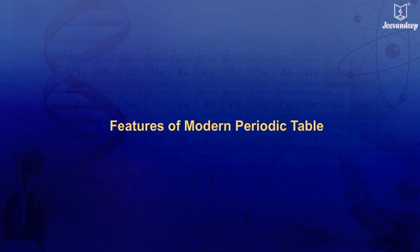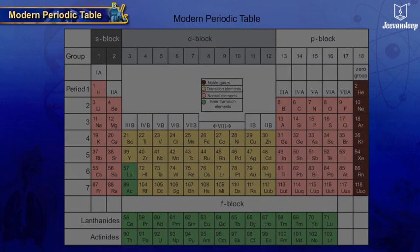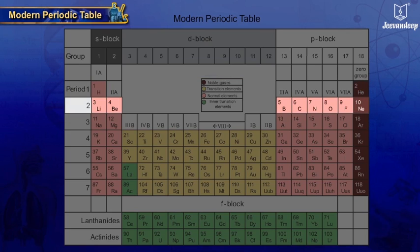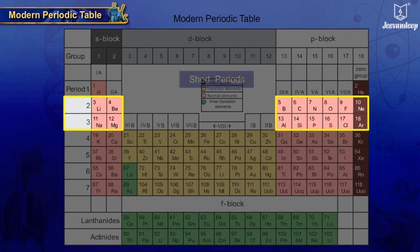Features of Modern Periodic Table: The first period is the shortest period containing only two elements. Second and third are short periods containing eight elements each.